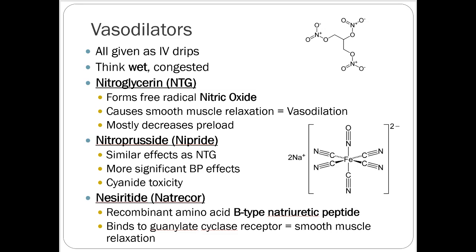All vasodilators are given as continuous IV infusions. Nitroglycerin forms nitric oxide, a natural vasodilator, and causes smooth muscle relaxation — mostly decreasing preload. It works quickly in pulmonary edema situations, improving breathing and O2 sats. Nitroprusside is a much more broad-spectrum vasodilator affecting both arterial and venous sides, decreasing preload and afterload, but it significantly drops blood pressure — we actually use it for hypertensive emergencies.